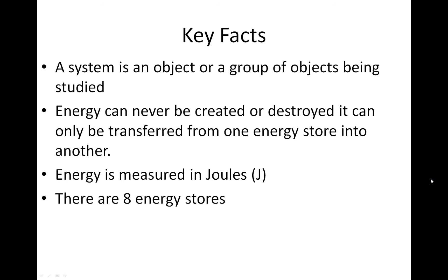Firstly, when we talk about energy we talk about the energy of a system. Now a system is an object or a group of objects being studied. So that could be a mass on a spring, or a car driving down the road, or a battery and a bulb connected in a circuit. These are all systems because they are objects or groups of objects.